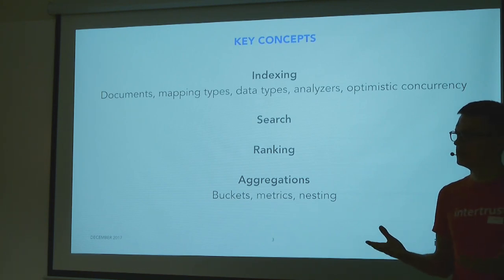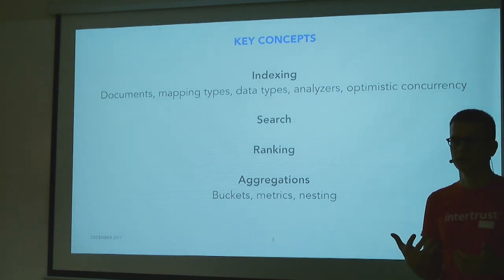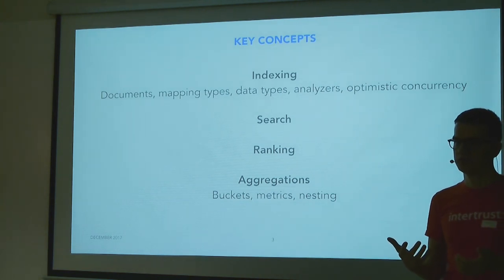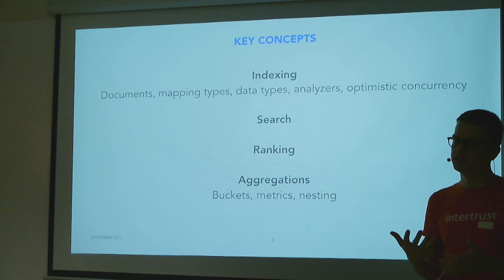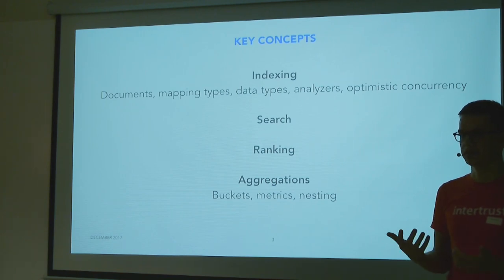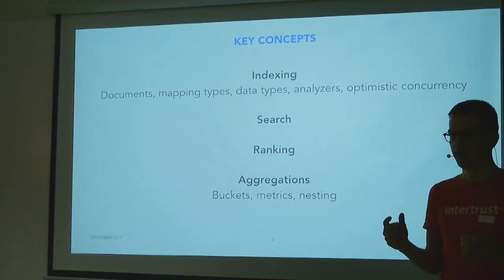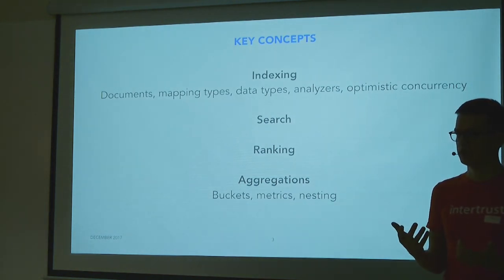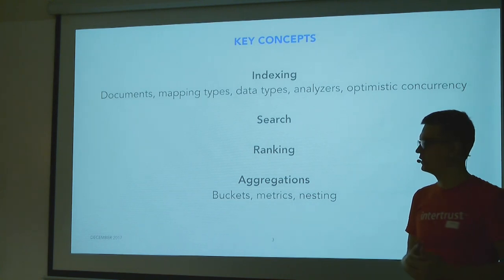When you index documents into Elasticsearch, documents will have something called mapping types, which describes the structure of the document. You can either create the mapping yourself or have Elasticsearch create it dynamically. It makes quite good sense of the data you're sending, but in some cases you might want to explicitly describe the kind of data you're indexing. For example, if you're sending numbers and the first document has a number without decimals, Elasticsearch will treat it as an integer and reject decimal numbers for that field.